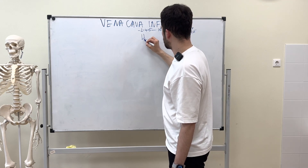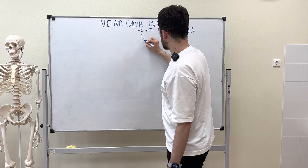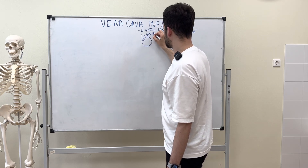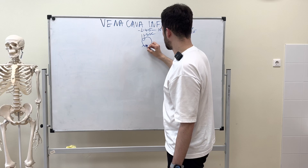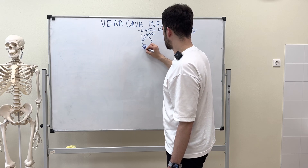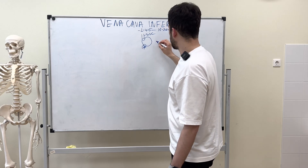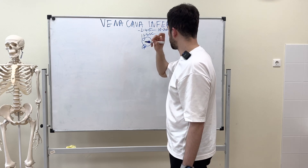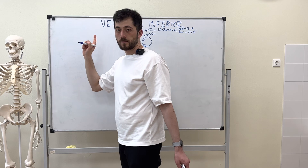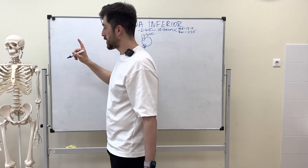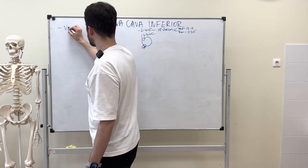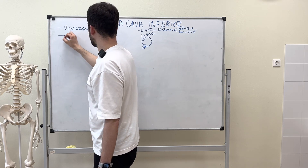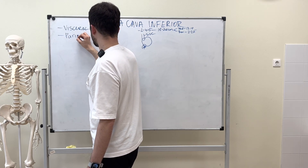Up here we have the superior vena cava, and below that is the inferior vena cava. Now let's talk about the tributaries. We have two types: visceral tributaries and parietal tributaries.